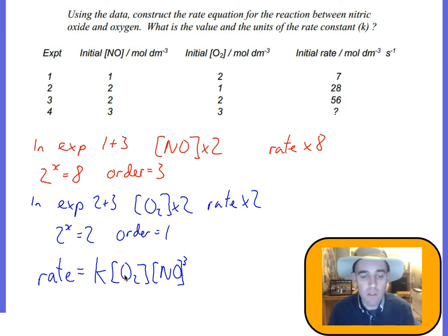We can rearrange this equation to find k. I should also say the overall order of this reaction will be 3 plus 1 because it's order 3 plus order 1, so altogether it's an order 4 reaction.